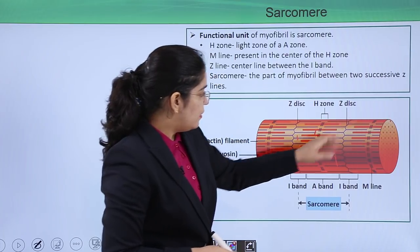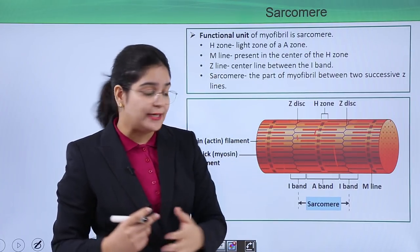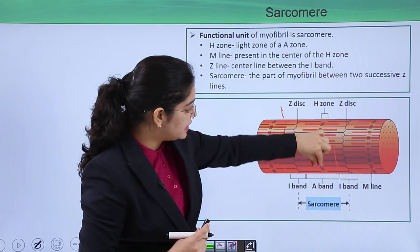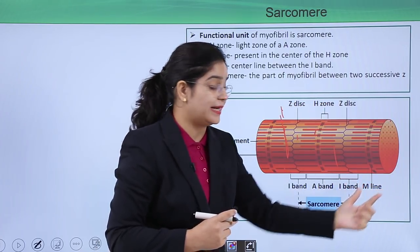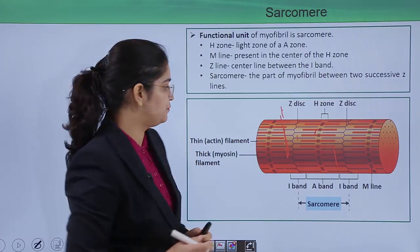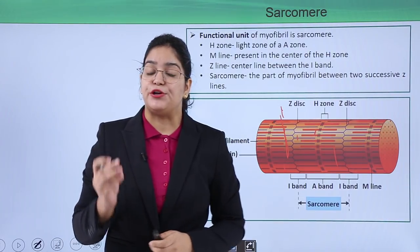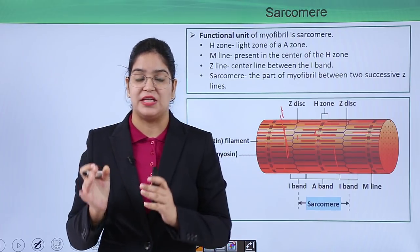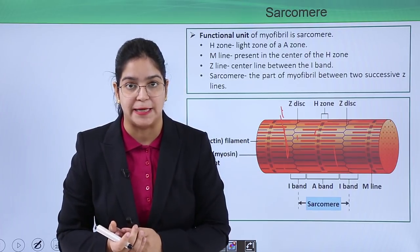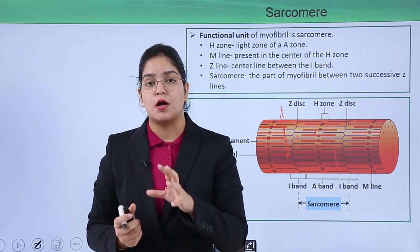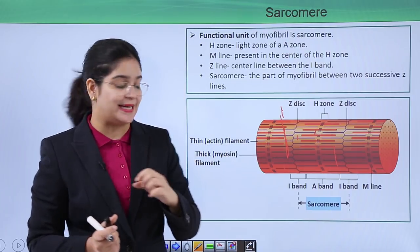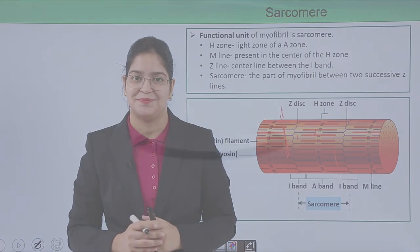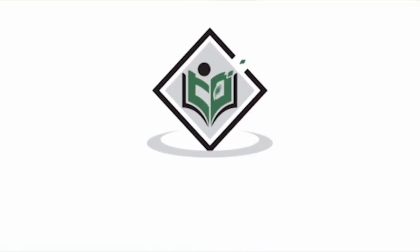The line passing through the thick filament in the middle is called the M line. In this video we have learned about the bands and structures of the thick and thin filaments. In the next video we will talk about the proteins present in these filaments. Thank you — Tutorialspoint.com, simply easy learning.